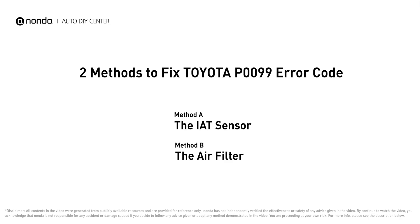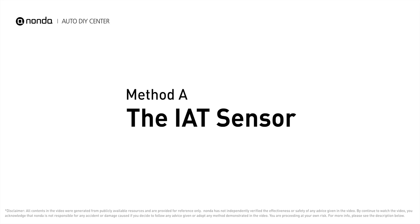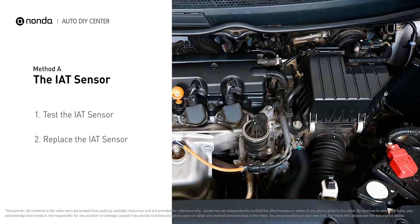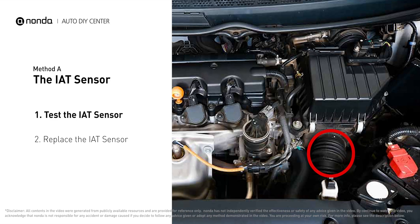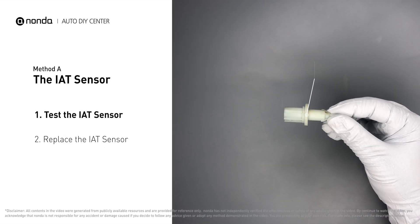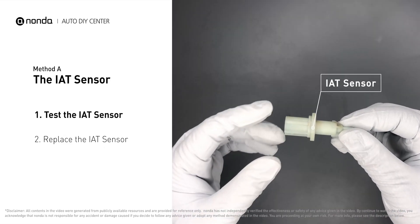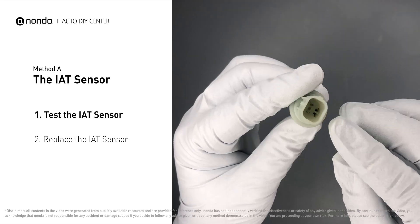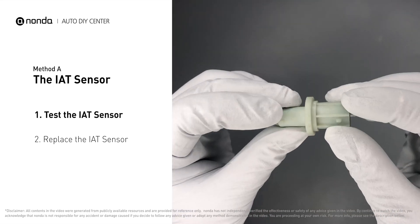Here are two of the most practical solutions to fix Toyota's P0099 error code. Method A: the IAT sensor. The IAT sensor could be on the throttle body, attached right to the intake manifold. First, carefully remove the IAT sensor from the vehicle. Visually inspect the sensor to make sure it hasn't been contaminated by a leak from another engine component.